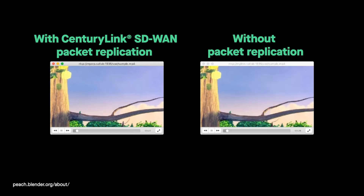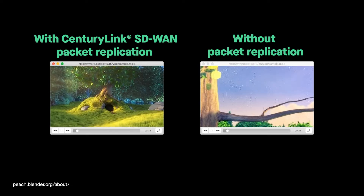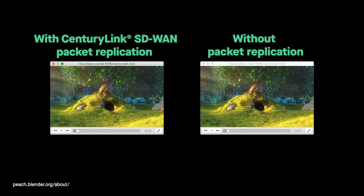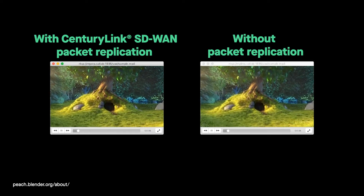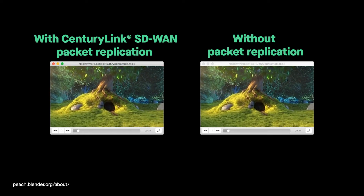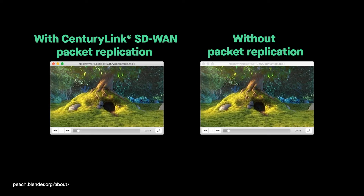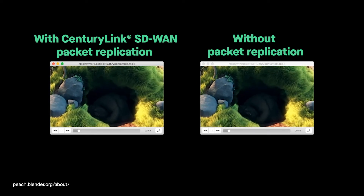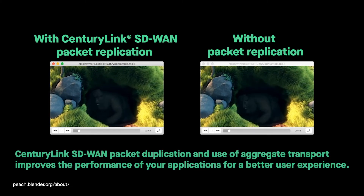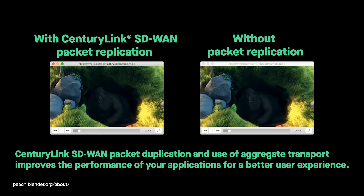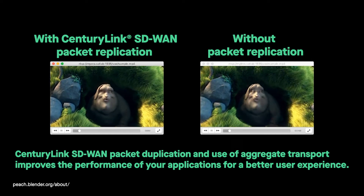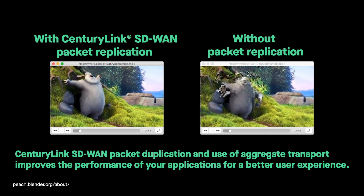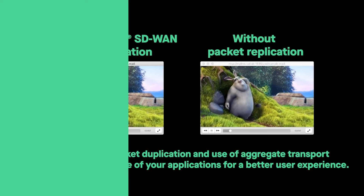The stream on the left is also suffering the same packet loss problem, but it's smooth. That's because it's running on CenturyLink SD-WAN, where we've instituted packet replication. The data packets are duplicated and sent over multiple circuits simultaneously. The ability to use the aggregate transport available at a location gives us an advantage over old-school active-passive failover techniques.